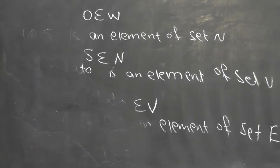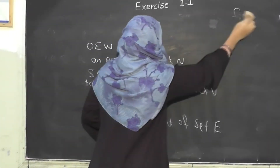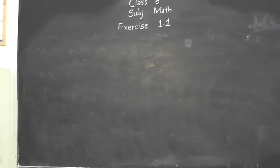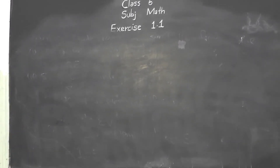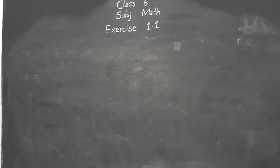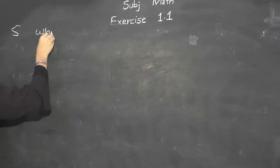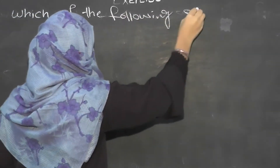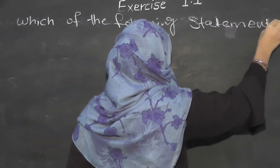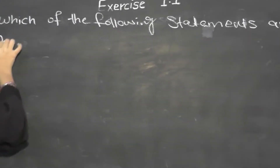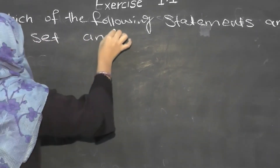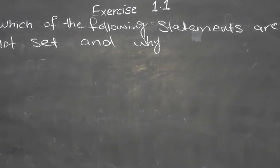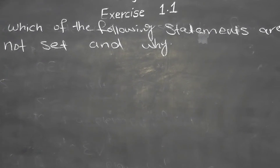Now let's move to question number 5, which gives you some statements. You have to determine which of the following collections are not a set and why. To do this, recall the set definition: a set must be distinct and well-defined. We have to check these two properties.